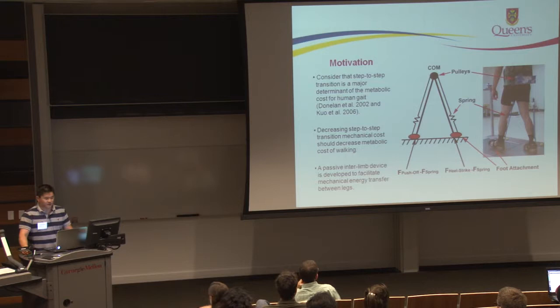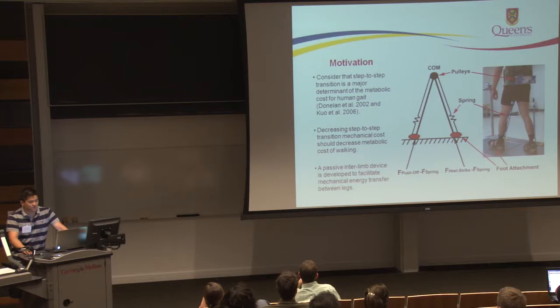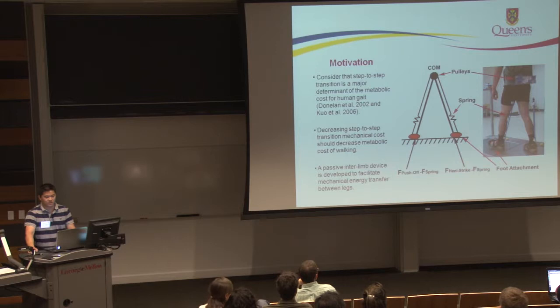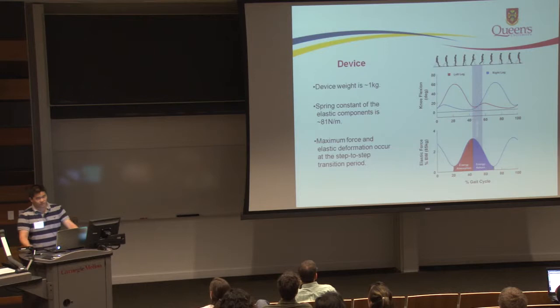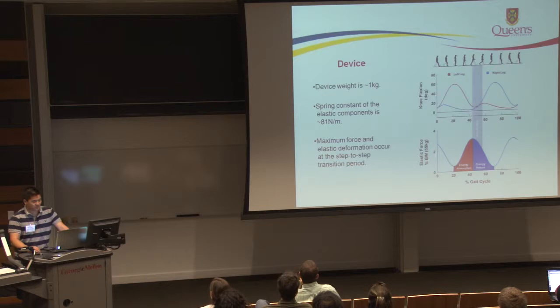In order to reduce the mechanical cost of the step-to-step transition, we developed a passive inter-limb device that facilitates mechanical energy transfer between the trailing and leading leg. Both legs are joined together by an elastic cable running through a set of pulleys, attached to commercially purchased heel harnesses worn over the subject's shoes. The entire device is mounted to a rigid backpack frame so that it can be worn by the subject. The total weight of the device is approximately only one kilogram, and the elastic cable has an effective spring constant of approximately 81 newtons per meter.